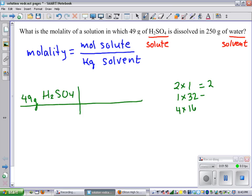It gives you 2, 32, 64, and if we add them together, we get 98. So we have 98 grams H2SO4 and 1 mole H2SO4, and this equals 0.5 moles of sulfuric acid.